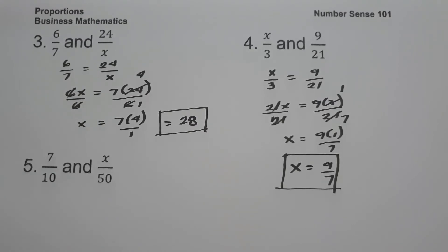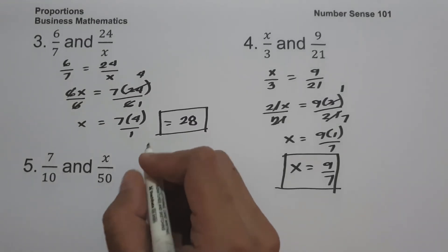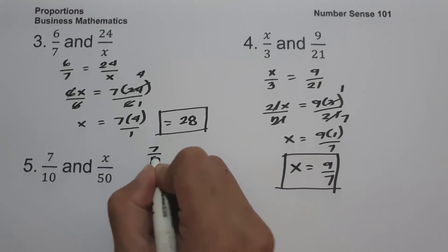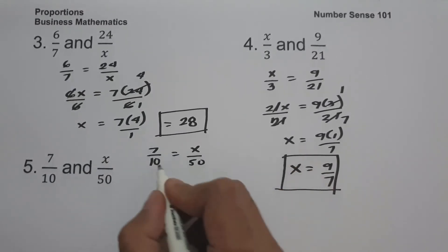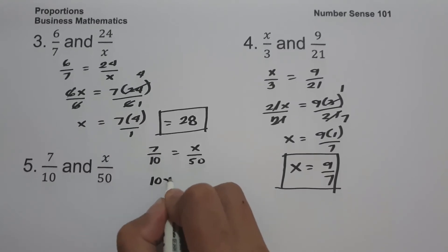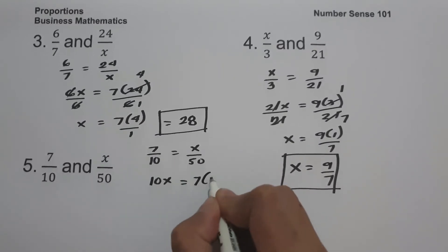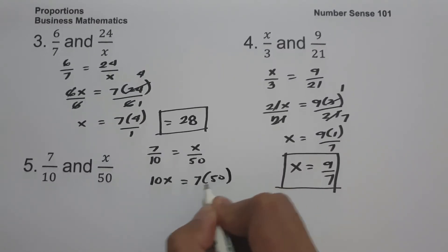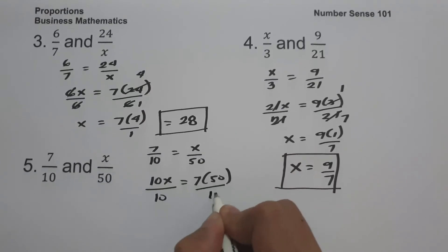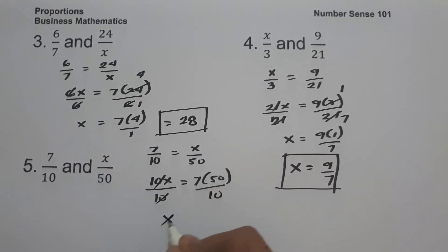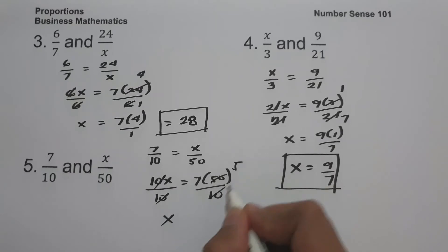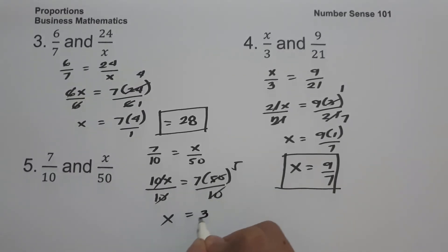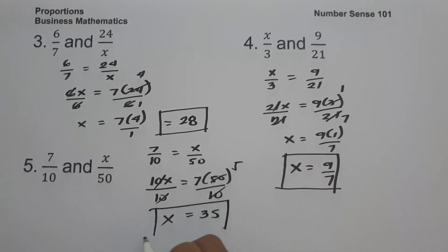On number five, we have 7 over 10 and x over 50. Setting up 7 over 10 equals x over 50, cross multiplying gives 10x equals 7 times 50. Dividing both sides by 10, 50 divided by 10 is 5, so x equals 5 times 7, which is 35. This is our answer.